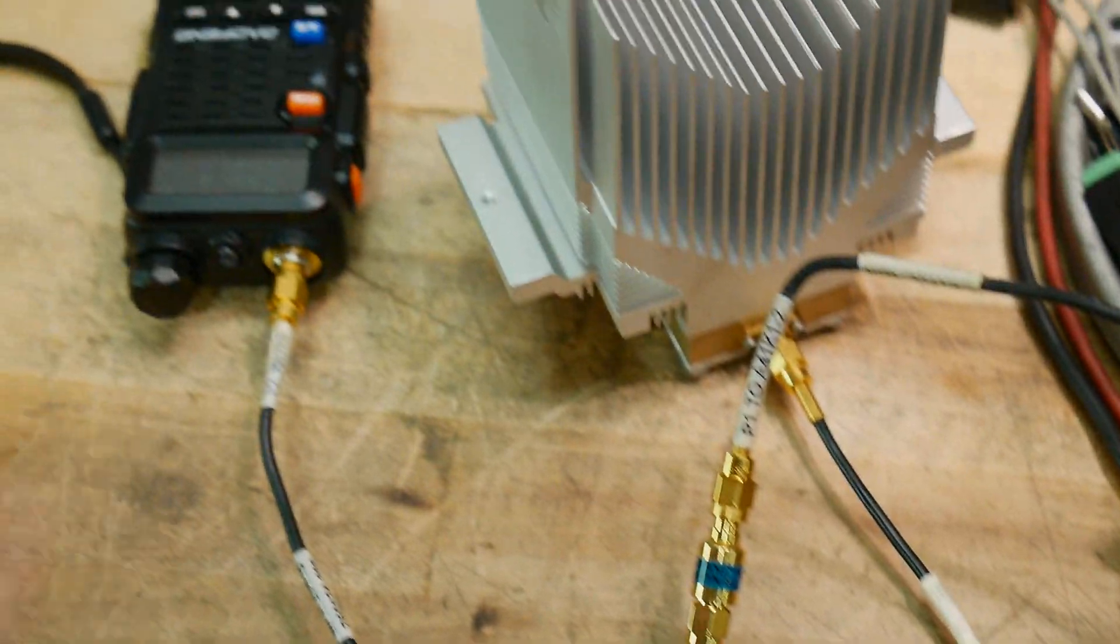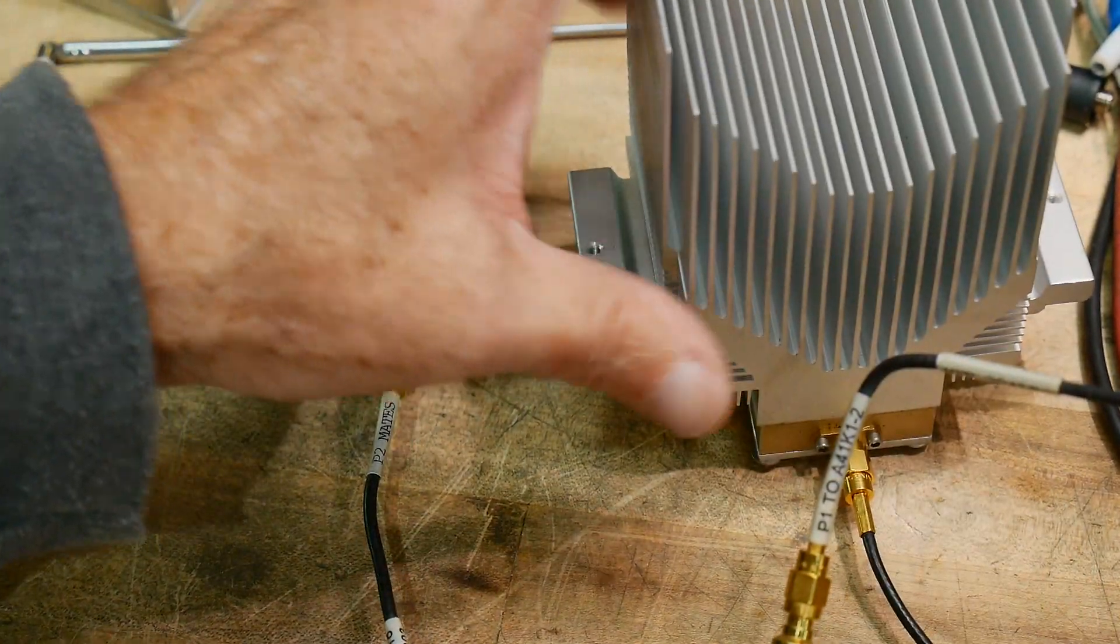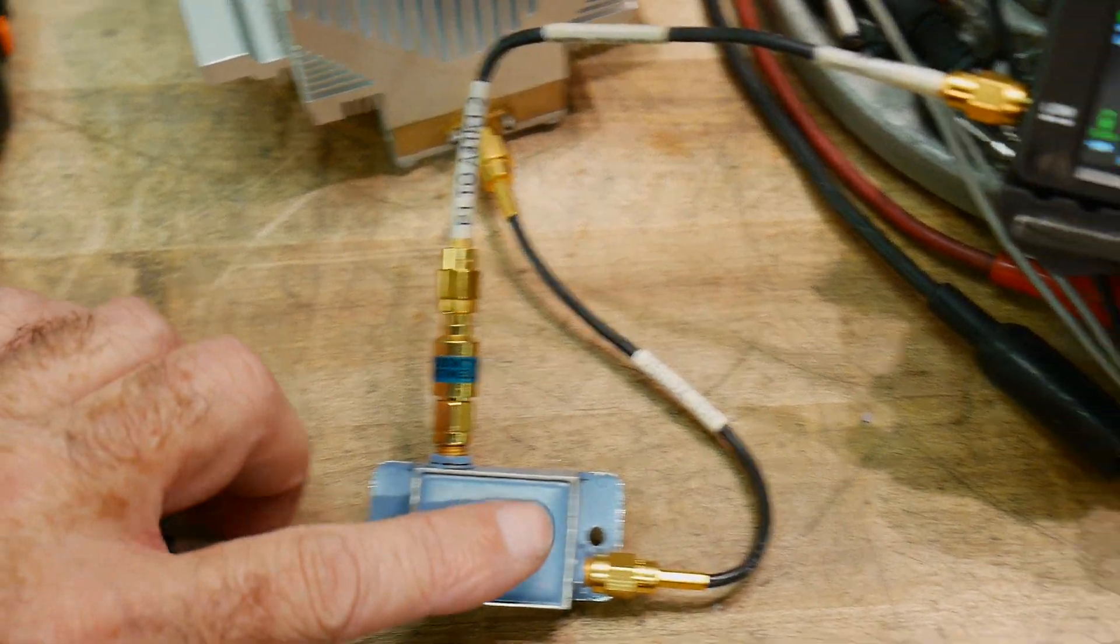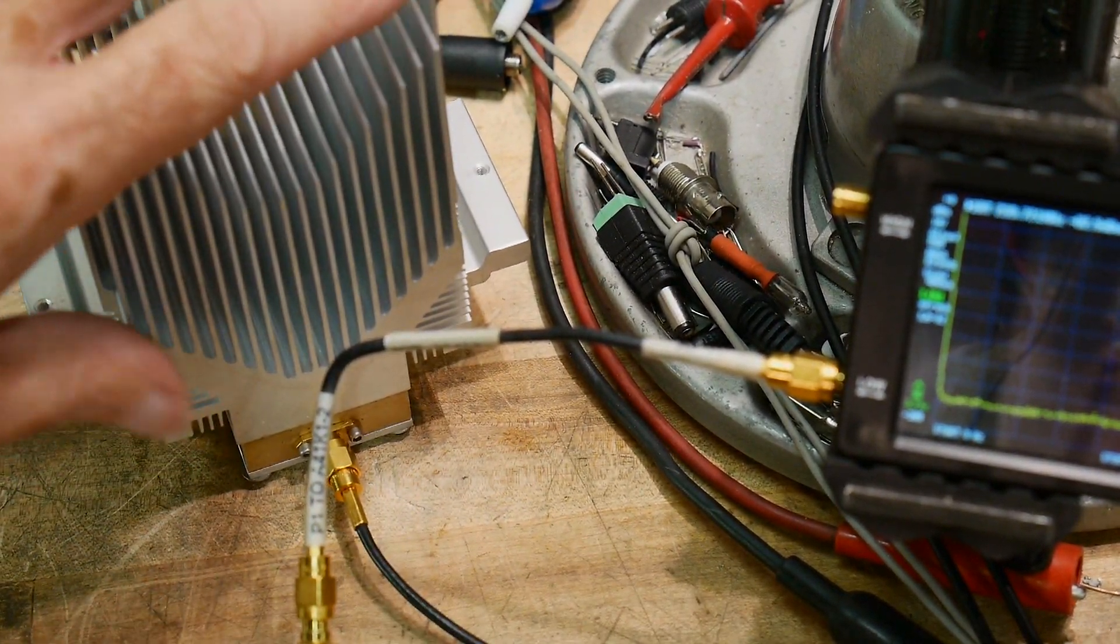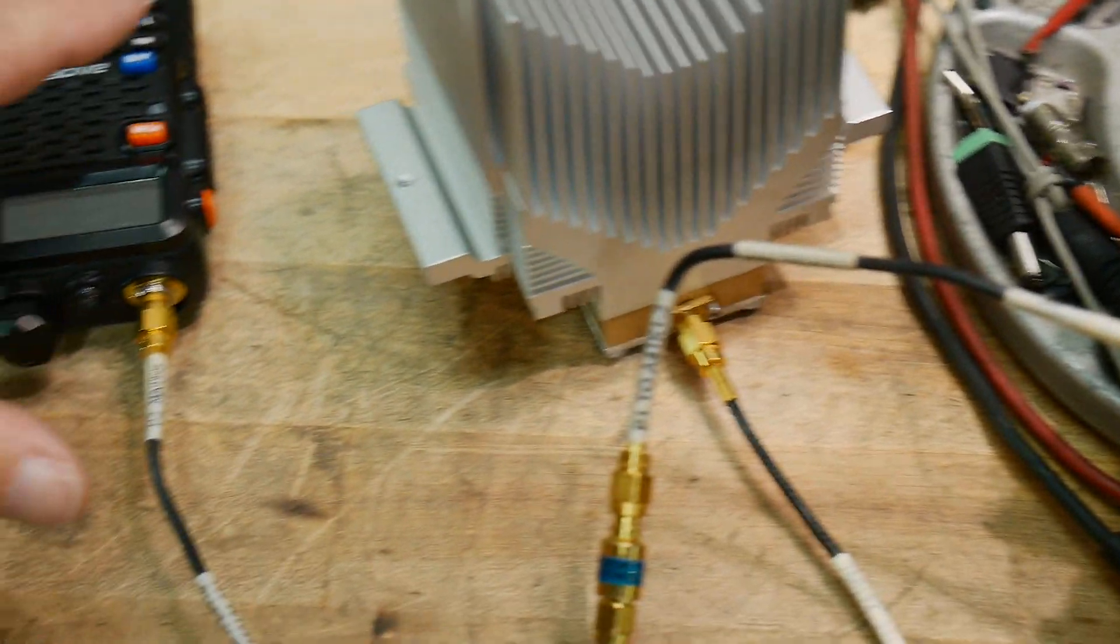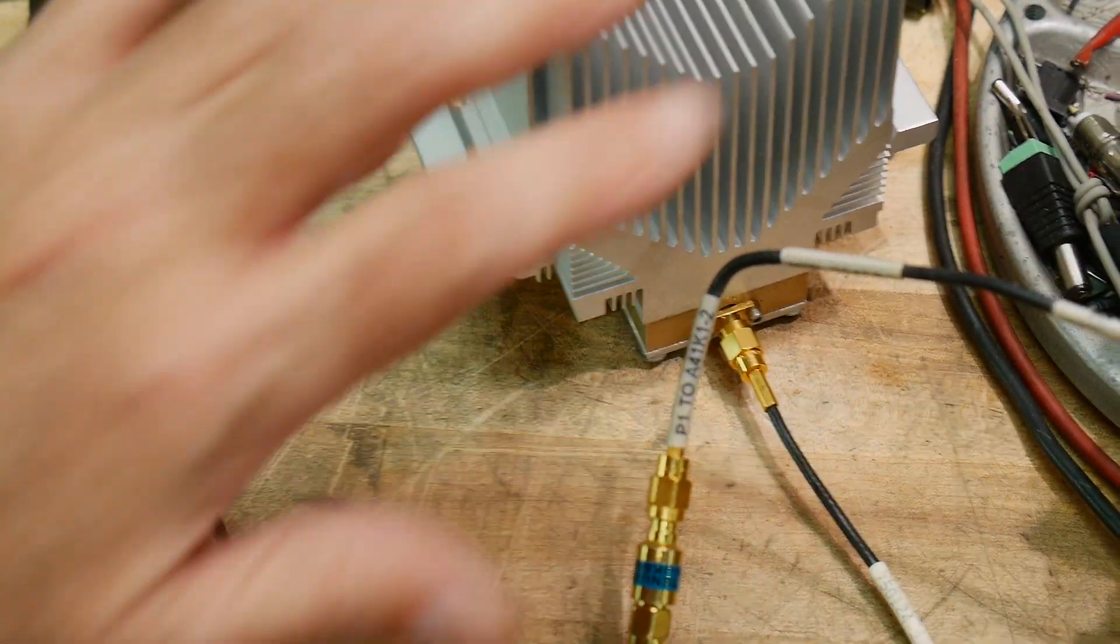We're going to connect this to our radio, and our radio is going to come in to the input. It's going to go through the coupler, and then it's going to go into a dummy load. So I have a 150-watt dummy load here. And so, transmission into the dummy load.